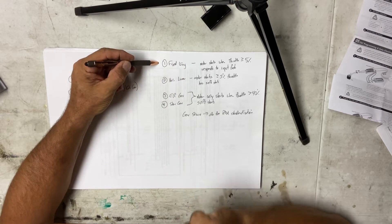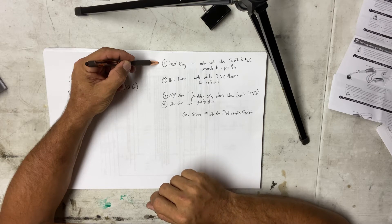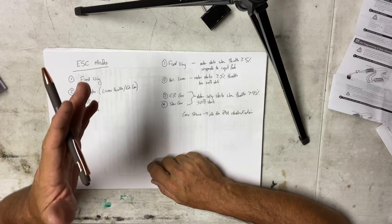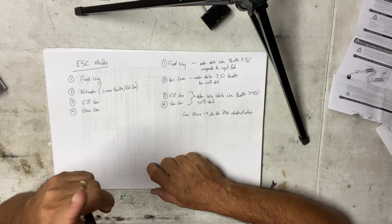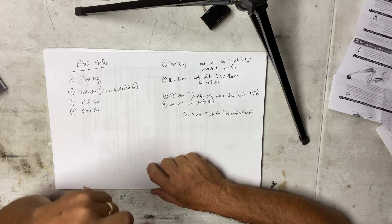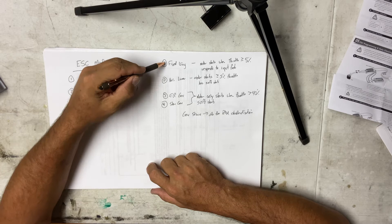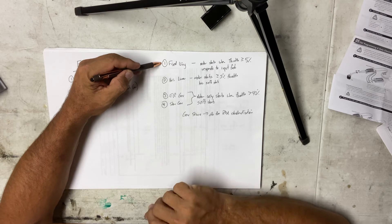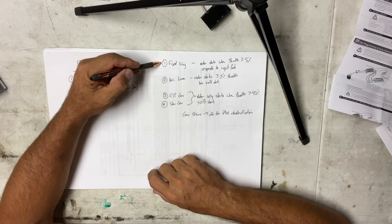Fixed wing mode means as you change your throttle command you get a proportionate and immediate response on the motor speed. If you're giving 30 percent throttle and increase to 35, the speed controller will immediately move the motor — no delay, like an airplane. This mode only starts adjusting motor speed when the throttle command reaches five percent or greater; below that, nothing happens.